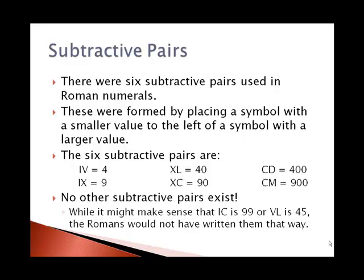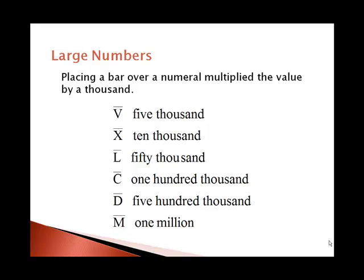If you want to get larger numerals, you can put a bar over those Roman numerals. 5,000 would be a V with a bar all the way up to 1,000,000 which is M with a bar over it. We rarely see these and so I probably won't use them very much but you ought to know about it.